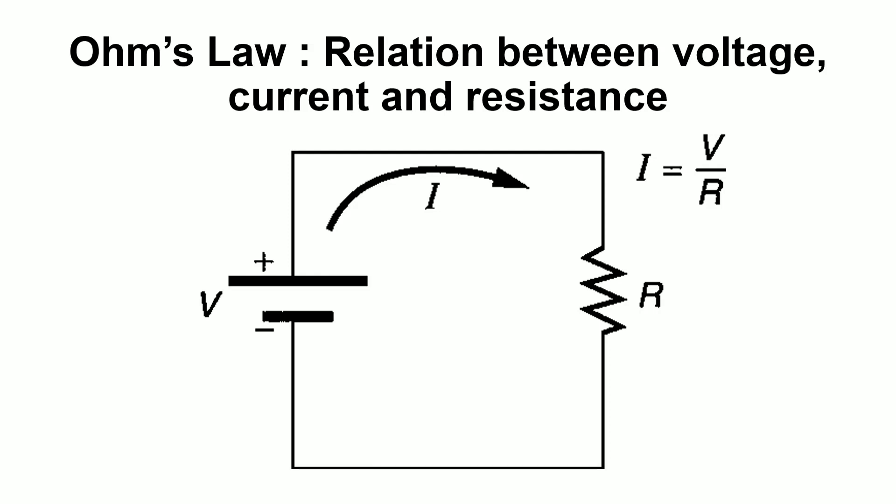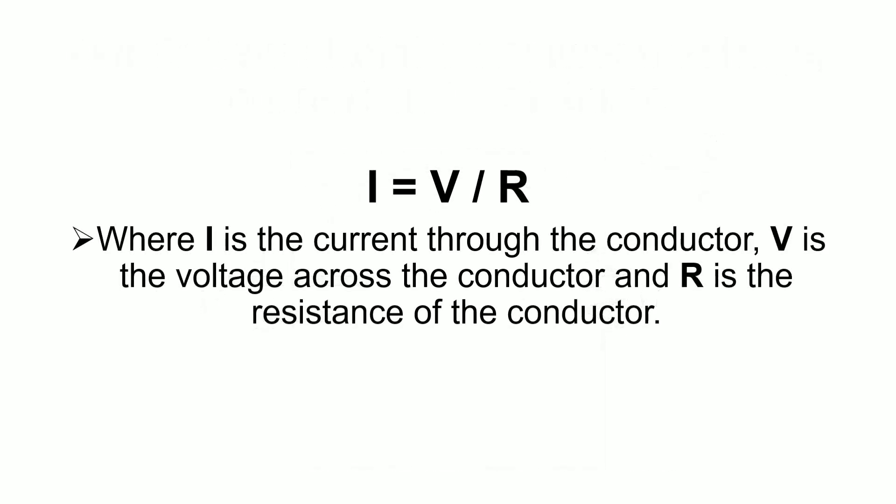Ohm's law can be defined as the amount of electric current through a metal conductor at a constant temperature in a circuit is proportional to the voltage across the conductor and can be described by I is equal to V divided by R.